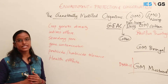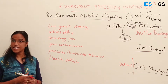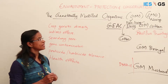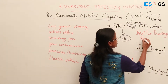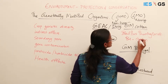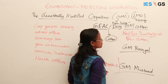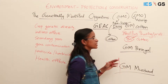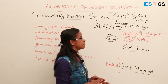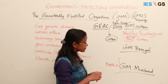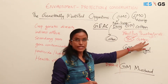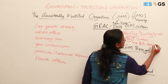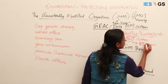In India, in an agricultural context, the first genetically modified crop introduced was GM cotton, commonly known as Bt cotton. It uses a gene from the bacteria Bacillus thuringiensis — hence the name 'Bt' cotton. This bacterial gene incorporated into the cotton plant produces a toxin called Bt toxin, which is harmful to certain insects and pests.